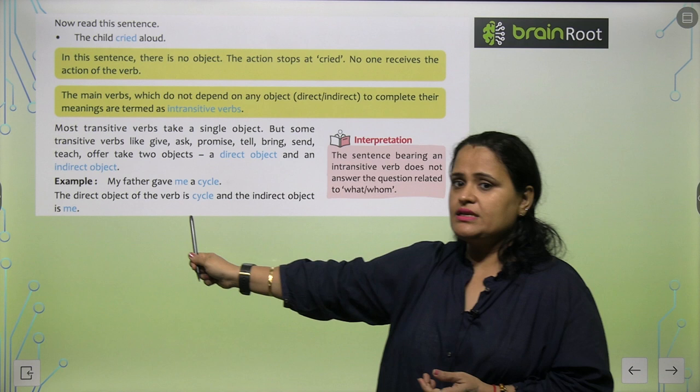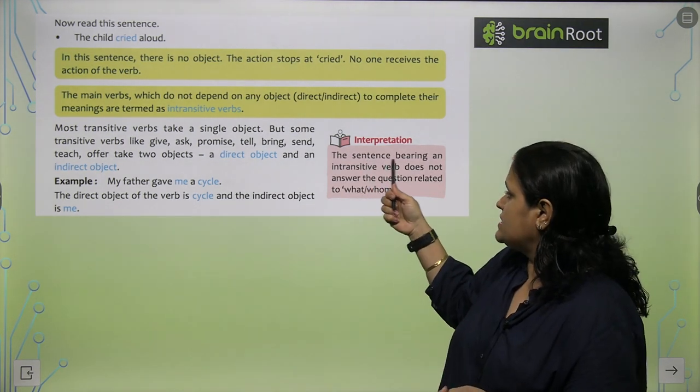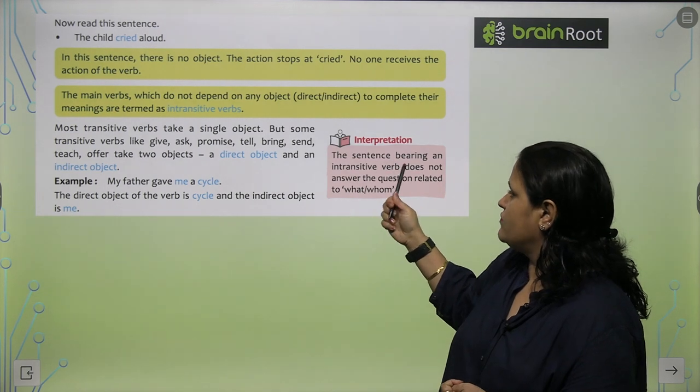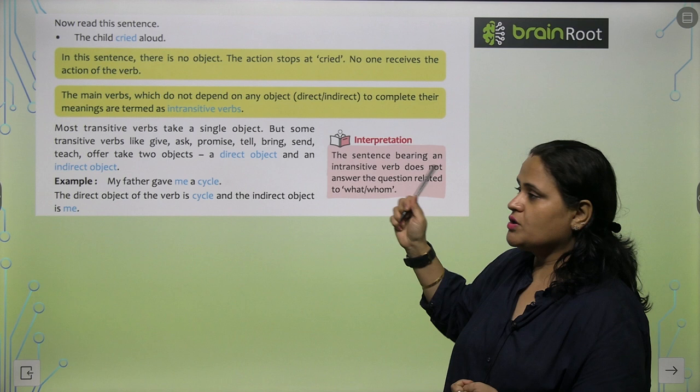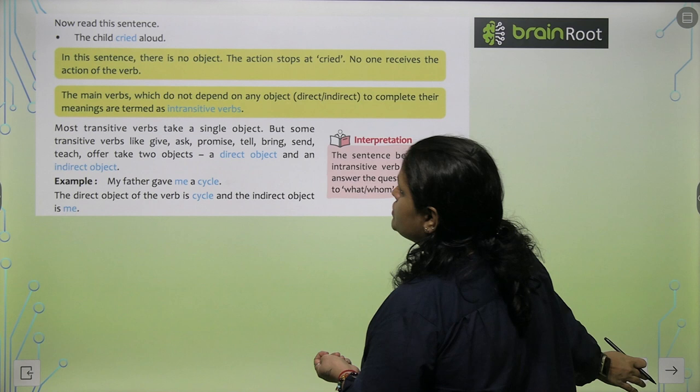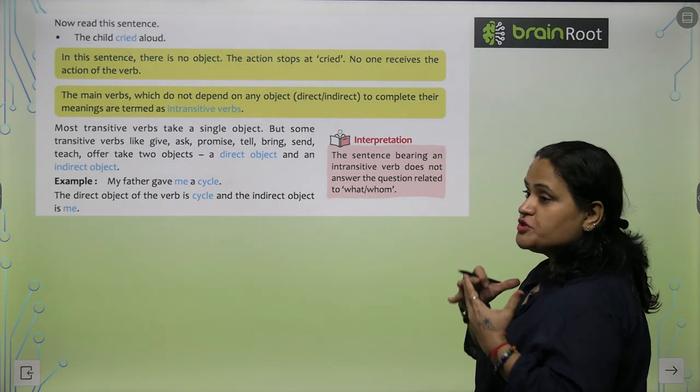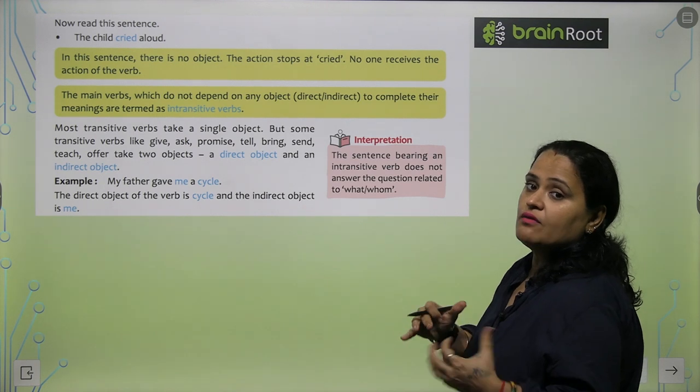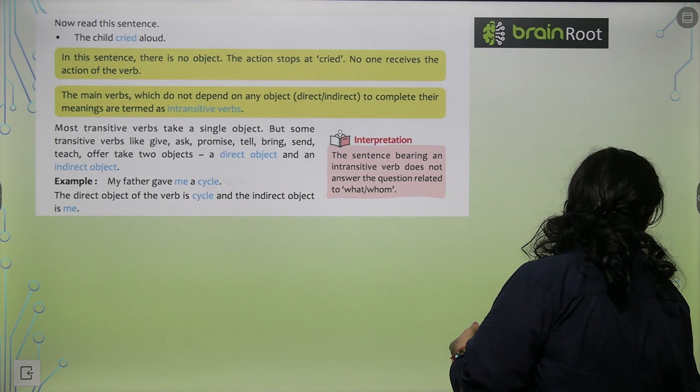So direct kya hai? Cycle. Indirect kya hai? Me. The sentence bearing an intransitive verb does not answer the question related to what or whom. Transitive verbs answer the question of what and who. So now you are clear that jo object pe depend nahi hoti wo intransitive verb hoti hai, aur jo object pe depend hoti hai wo hoti hai transitive verb.